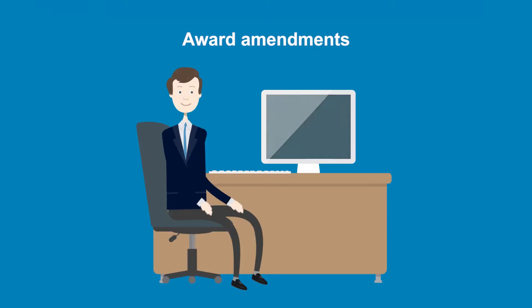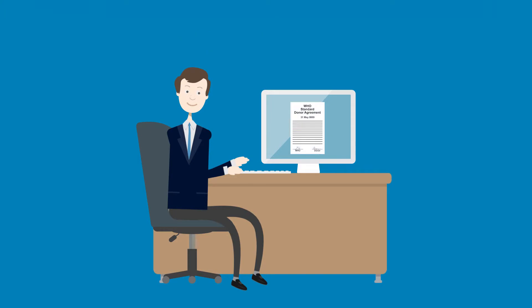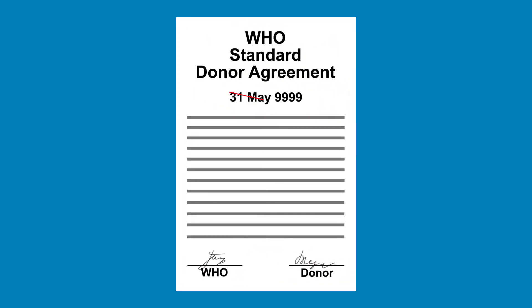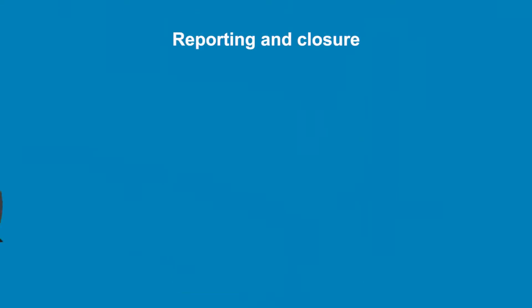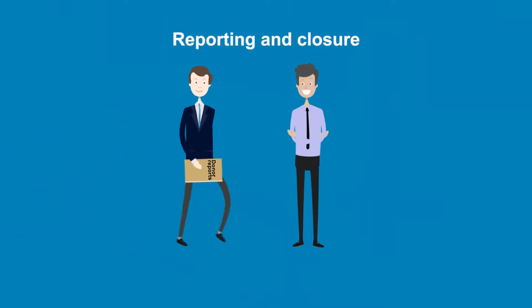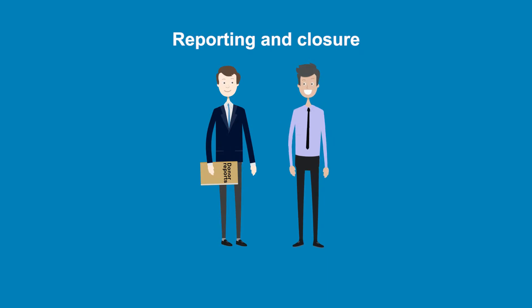Remember, should an amendment to the agreement be required, such as a no-cost extension, ERP is to be informed as early as possible. And finally comes the donor reporting stage, where the organisation's good work should be highlighted. Our focus in this module is donor reporting. Further details of the other stages can be found in the awards management modules.